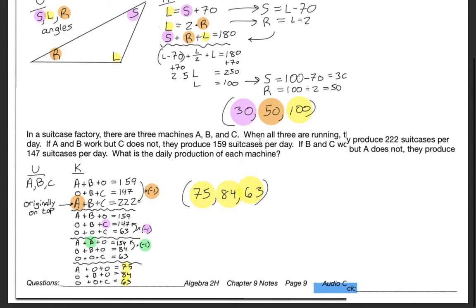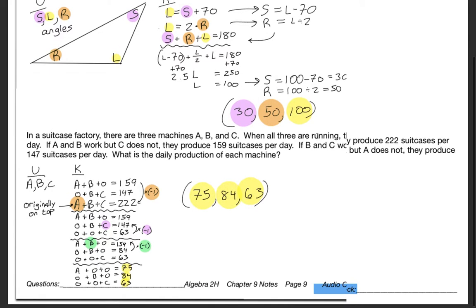In a suitcase factory, there are three machines A, B, and C. When all three are running correctly, they will produce 222 suitcases per day. If A and B work but C does not, then you might be wondering what the audio check for today is.